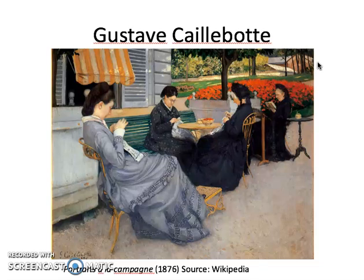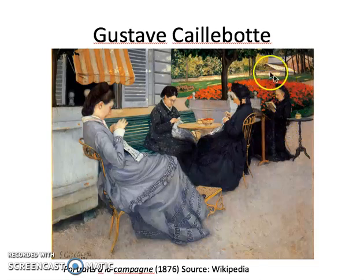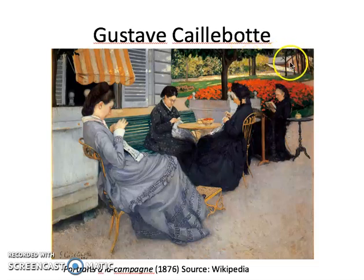Gustave accomplishes this illusion of space by doing a couple of things. First of all, he overlaps — he puts the things that are closer to us in clear view, and those items overlap things that are farther back in the distance. He also uses atmospheric perspective, where things in the background are just a little bit lighter, sometimes even bluer, and they're less distinct. There's less detail in things in the background than in the foreground — here we can see all of this detail in the dress, something you wouldn't typically see in the background.